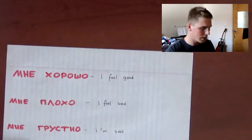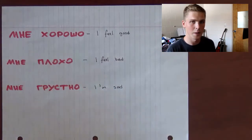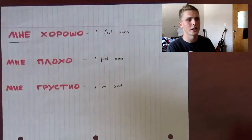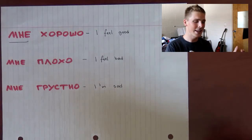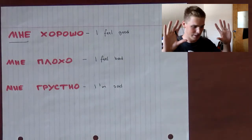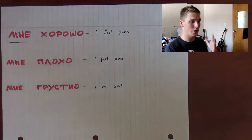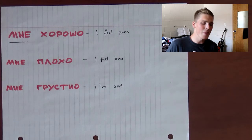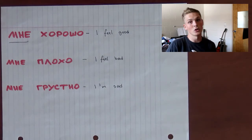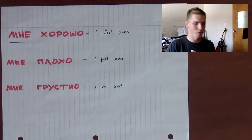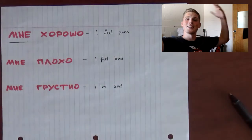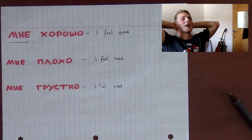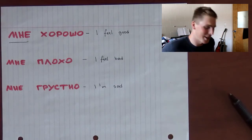Next is a list where the subject is МНЕ. МНЕ means 'to me.' So МНЕ хорошо — хорошо means good — so literally it's 'it is good to me.' But to make sense in English, we should translate it as 'I feel good.' So МНЕ хорошо is like you're on the beach, the sun is shining, you're laying down sunbathing, and you say МНЕ хорошо — I feel good.